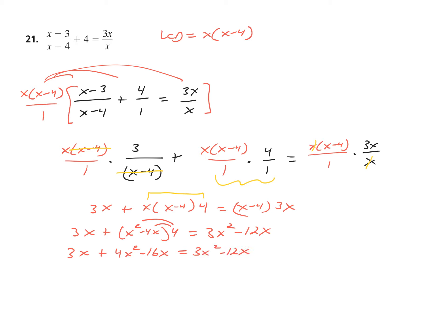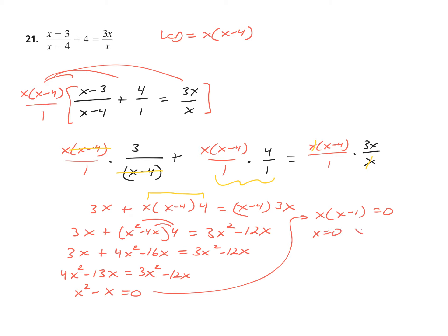Let's not do anything until we combine like terms. I get 4X squared minus 13X equals 3X squared minus 12X. Clearly, we're moving everything from right to left. Subtracting 3X squared leaves me X squared. Adding 12X leaves me just minus X equals 0. It's not really a quadratic method — let's just factor. X times quantity X minus 1 equals 0. X equals 0, X equals positive 1.